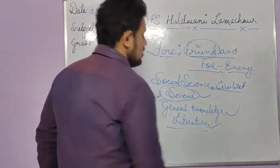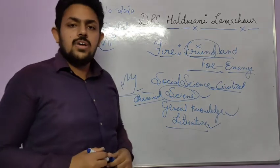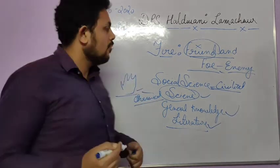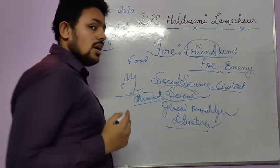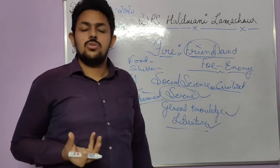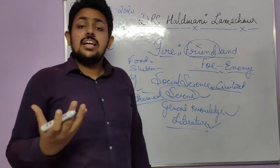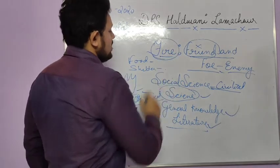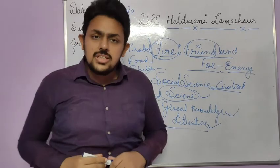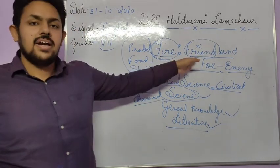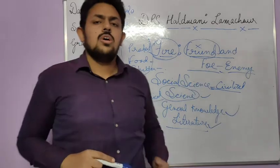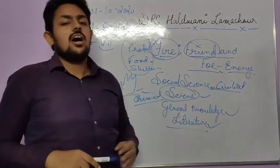So 'Fire Friend and Foe' is the chapter we are doing today and it is a very interesting one. Fire is something that completes our life — we need it to cook food, we need it for shelter, and we use it to process products. Everywhere, remember, fire is a very essential thing. We are going to study how fire is both a friend and a foe, and how you have to be very cautious with fire.